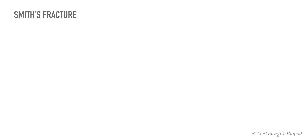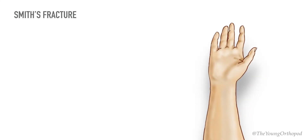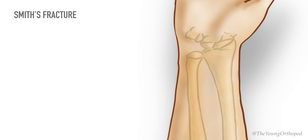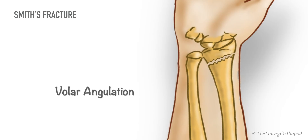Smith's fracture was described by Robert William Smith. It is a transverse fracture of the distal radius at the corticocancellous junction with volar angulation of the distal radius.